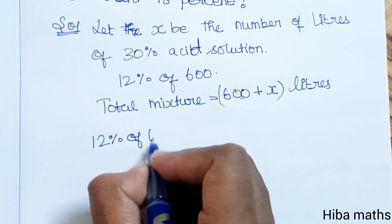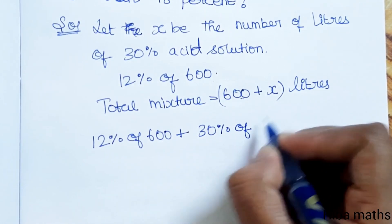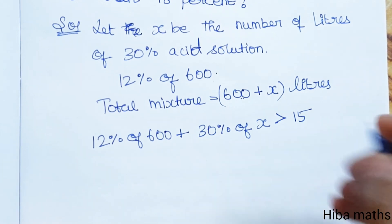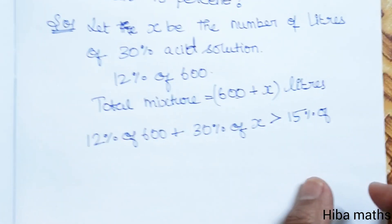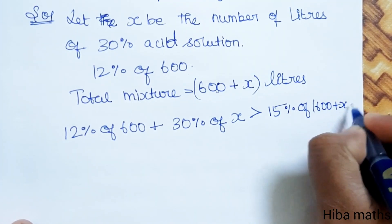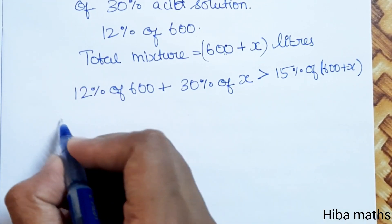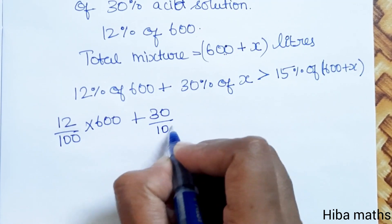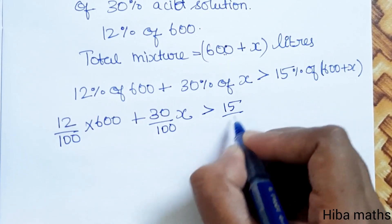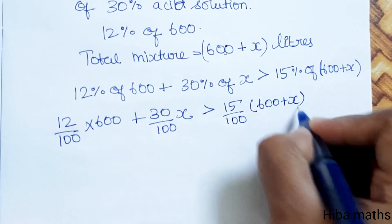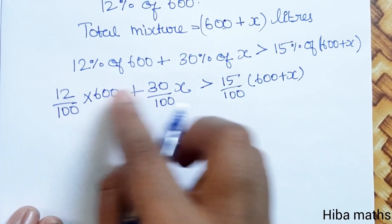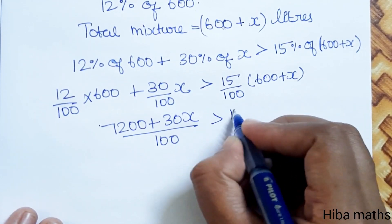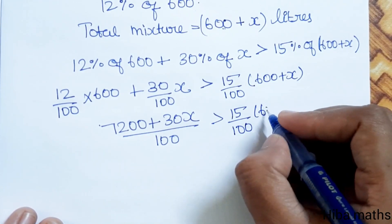First inequality: 12% of 600 plus 30% of x should be greater than 15% of the total mixture, which is 600 plus x. That gives us: 12/100 × 600 + 30/100 × x > 15/100 × (600 + x). This simplifies to 7200 plus 30x divided by 100, greater than 15/100 into (600 + x).